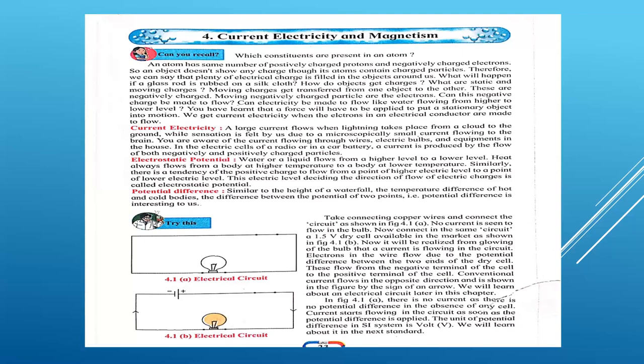This potential difference is a scalar quantity and its unit is volt. I hope all of you have understood the meaning of potential difference. It is a scalar quantity, its unit is volt, and it is given in honor of the scientist Alessandro, who discovered this. To give him honor, we write volt as the unit of potential difference.